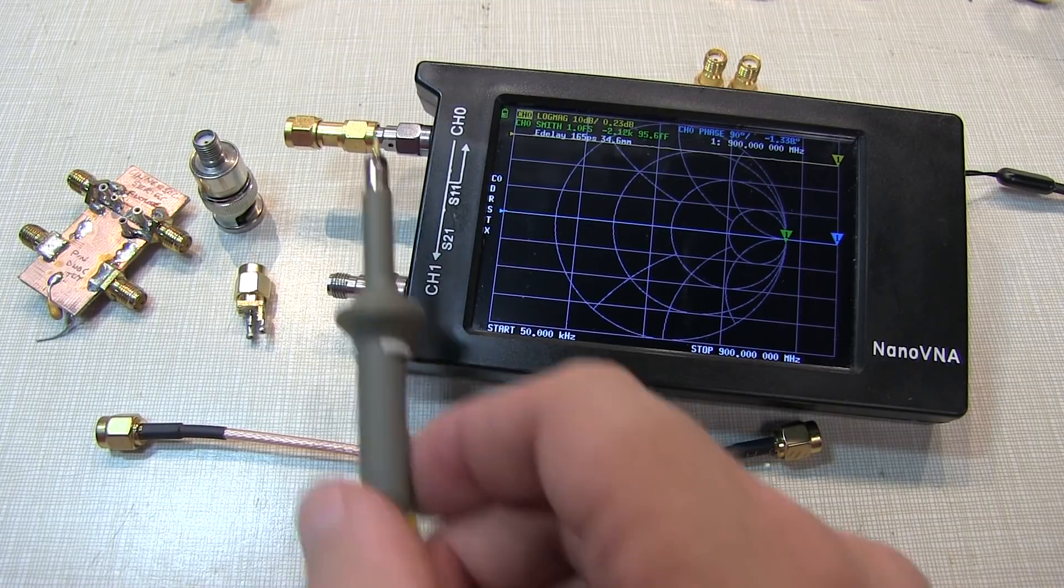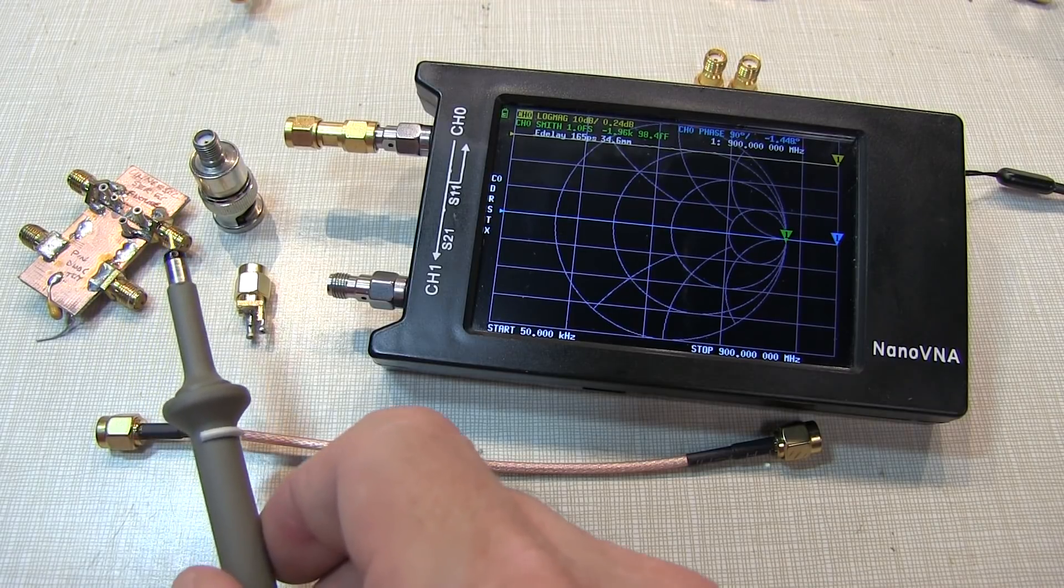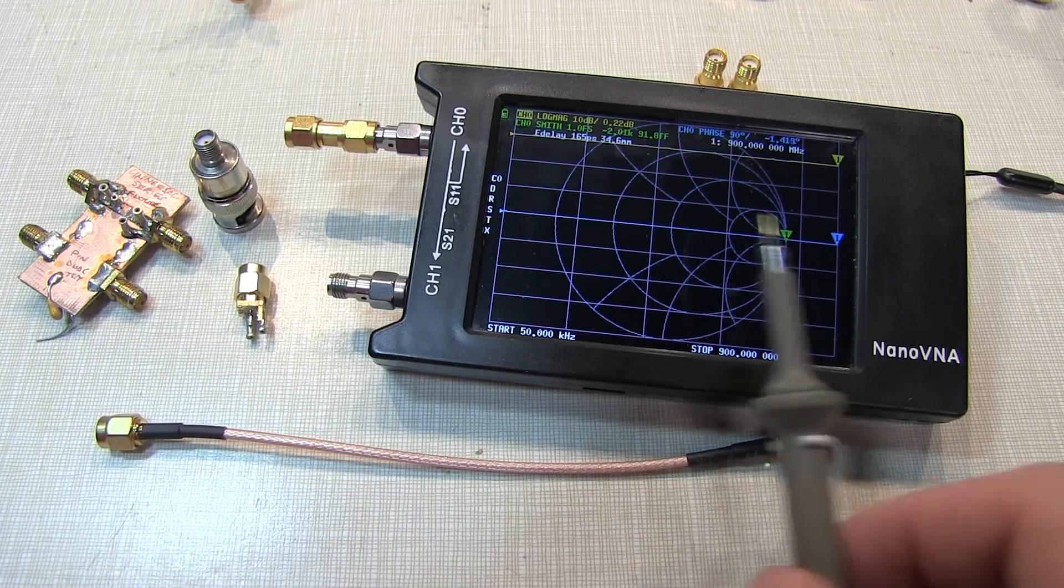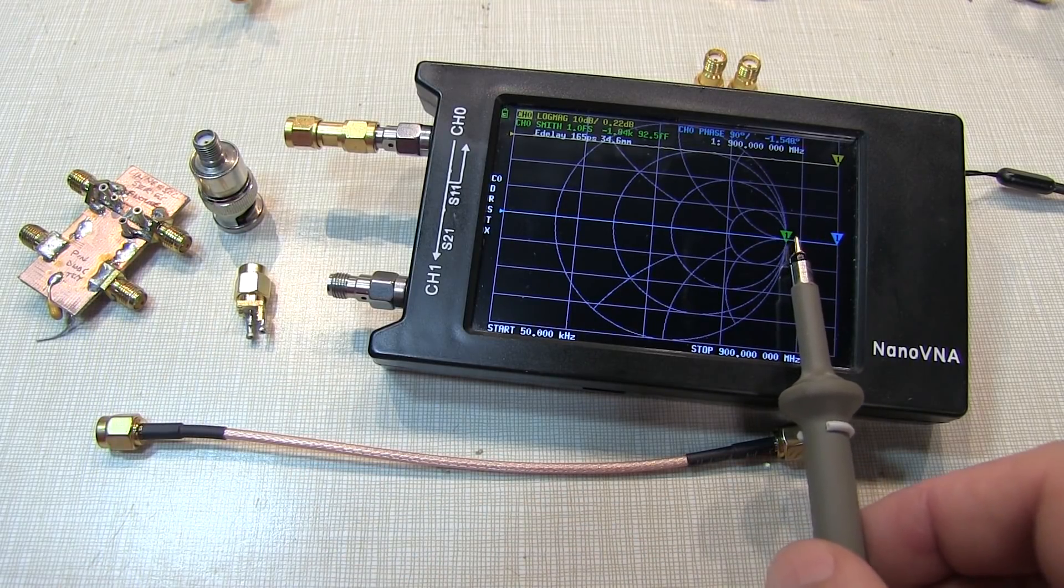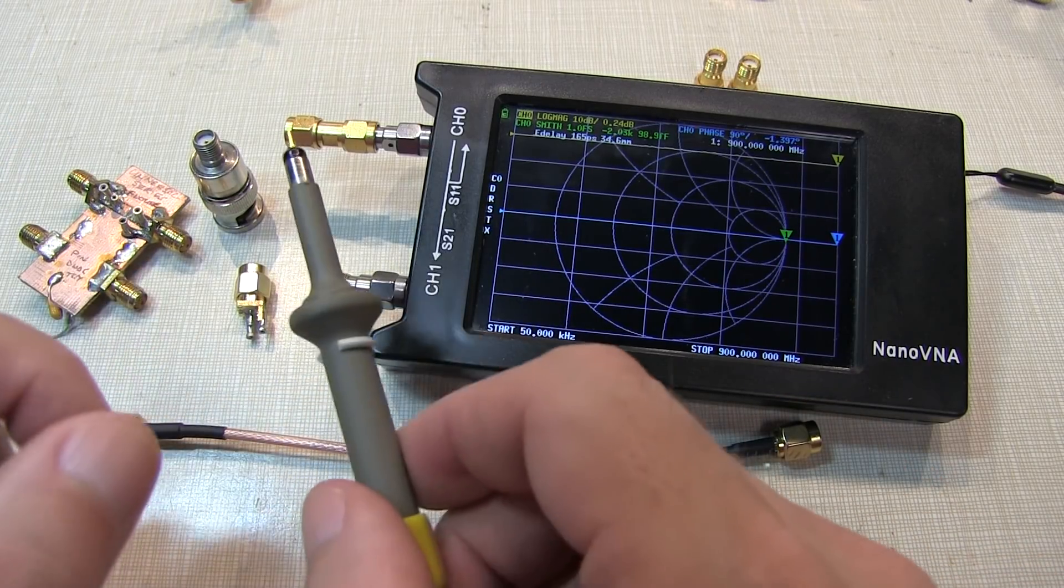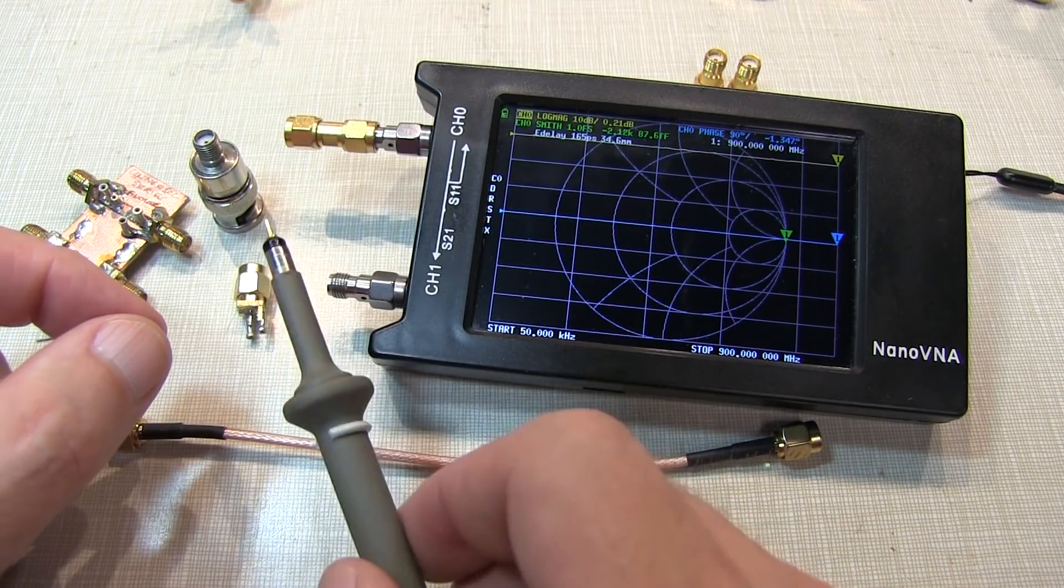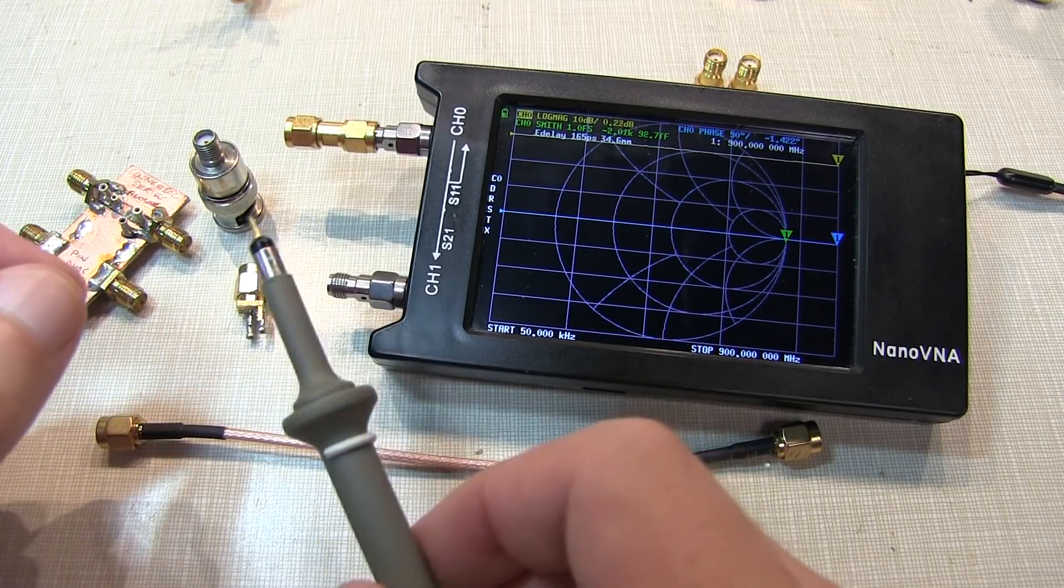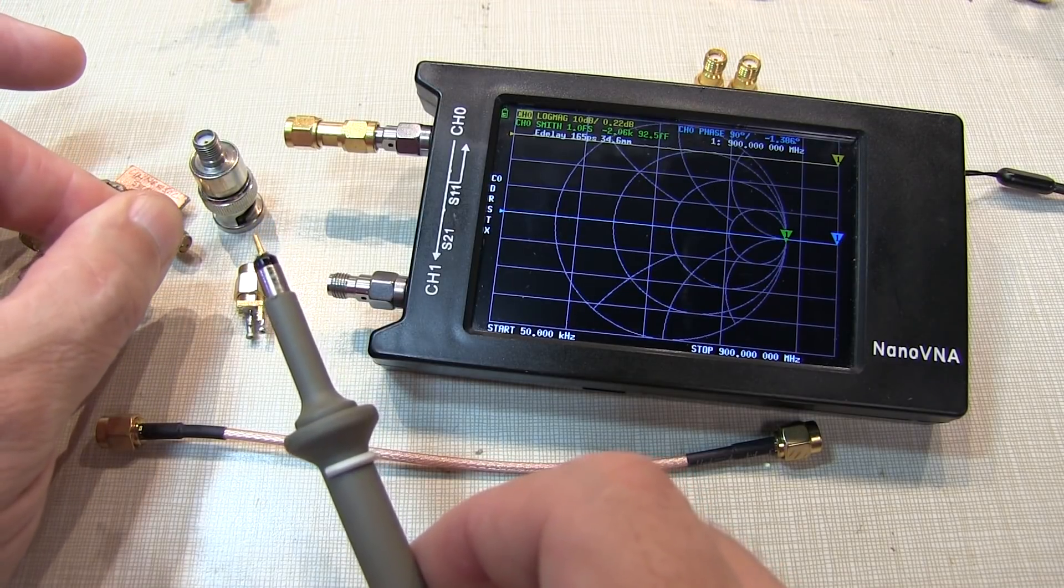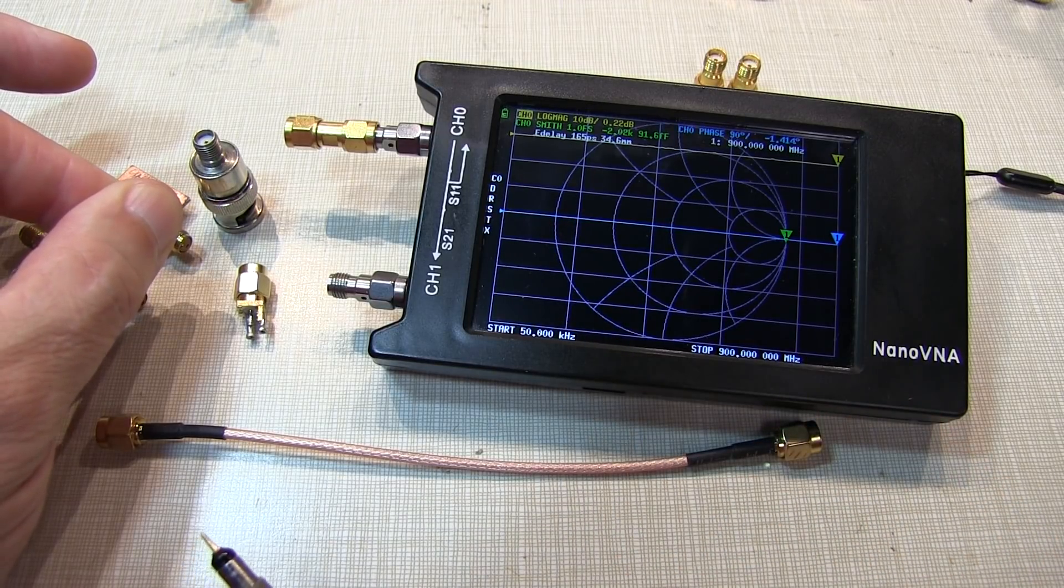So after doing your calibration and hooking up whatever adapters you have to get to your particular device under test, take a look at, on the Smith chart, for example, what an open or a short looks like at your device to make sure you're sitting at the three o'clock or nine o'clock position on the Smith chart. If your device is, say, an antenna embedded on a printed circuit board, for example, you might have a way of actually creating an open or a short. You can even go down with the blade of an X-Acto knife right at the input of your antenna, for example, and create a short on the board and see if that winds up showing up at the nine o'clock position on the Smith chart as it should.